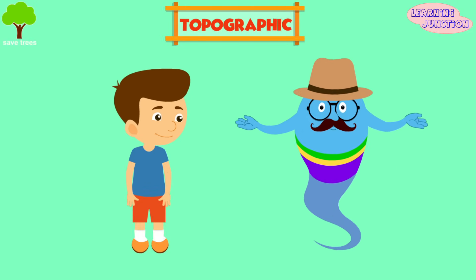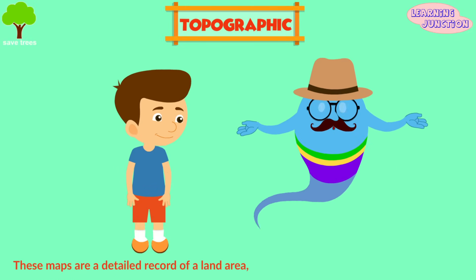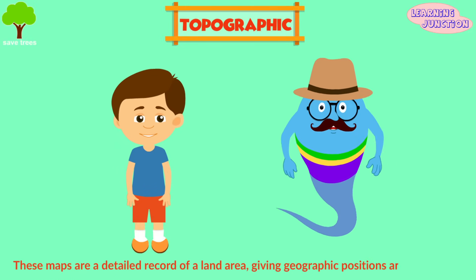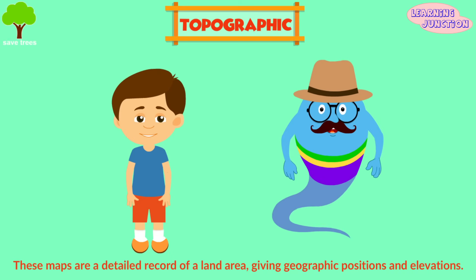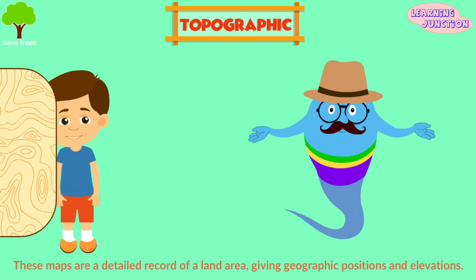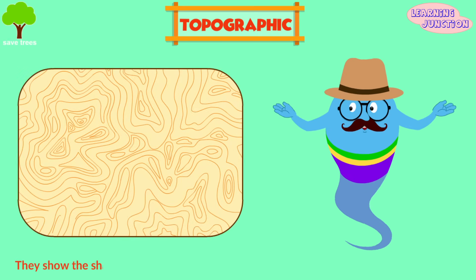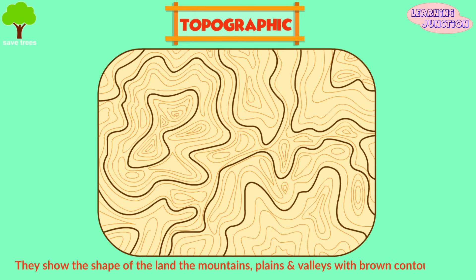Topographic maps — these maps are a detailed record of a land area, giving geographic position and elevations. They show the shape of the land, the mountains, plains and valleys by means of brown contour lines.